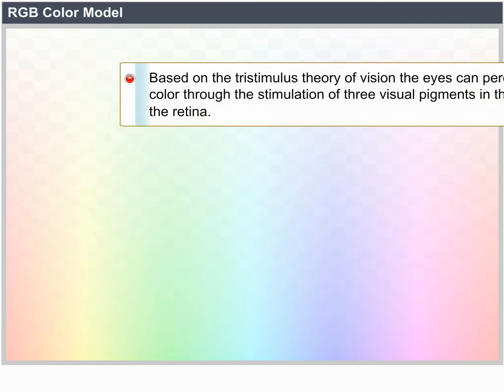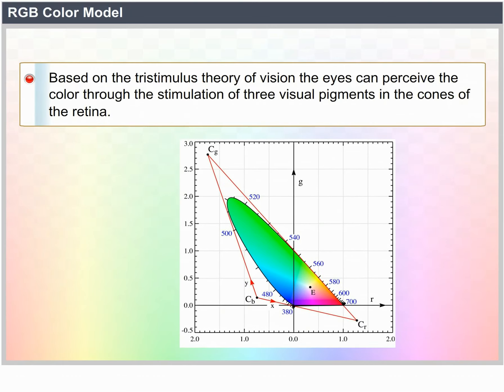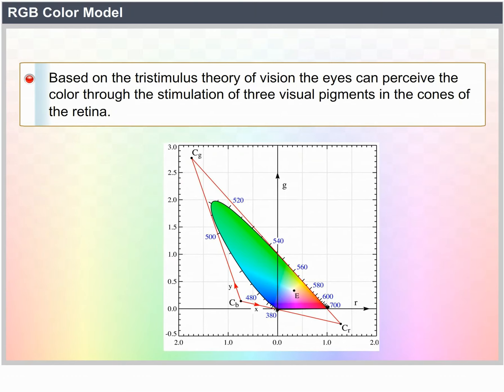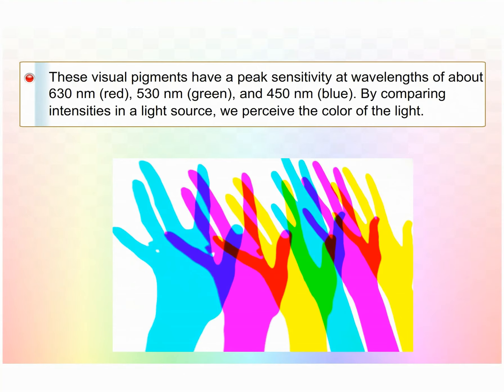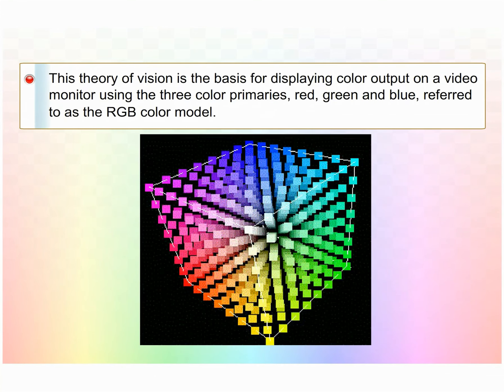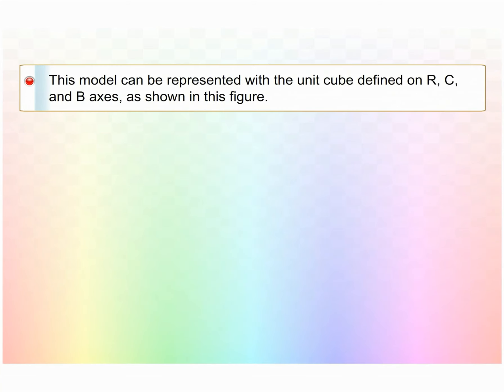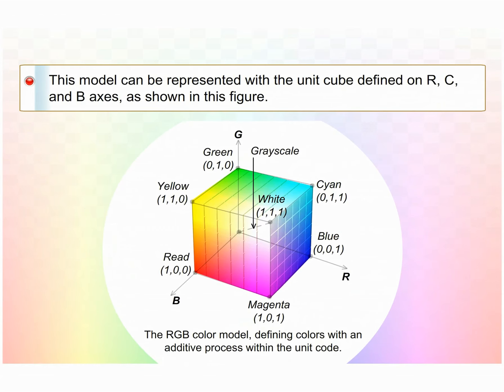RGB color model. Based on the tri-stimulus theory of vision, our eyes perceive color through the stimulation of three visual pigments in the cones of the retina. These visual pigments have peak sensitivity at wavelengths of about 630 nm (red), 530 nm (green), and 450 nm (blue). This theory is the basis for displaying color output on a video monitor using the three color primaries — red, green, and blue — referred to as the RGB color model. We can represent this model with the unit cube defined on R, G, and B axes.